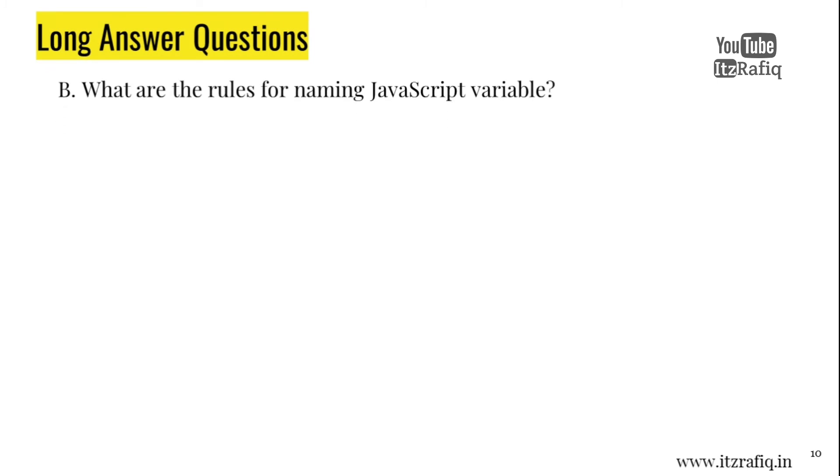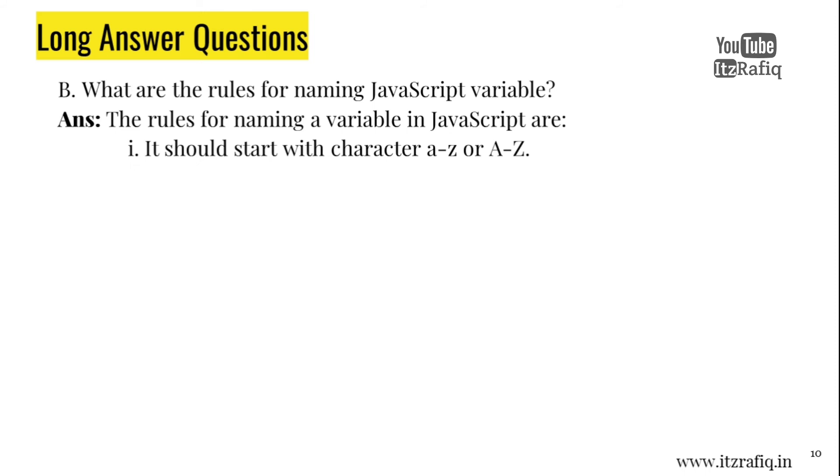B. What are the rules for naming JavaScript variable? The rules for naming variable in JavaScript are: it should start with character small a to z or capital A to Z. Number two, it should not start with a number.